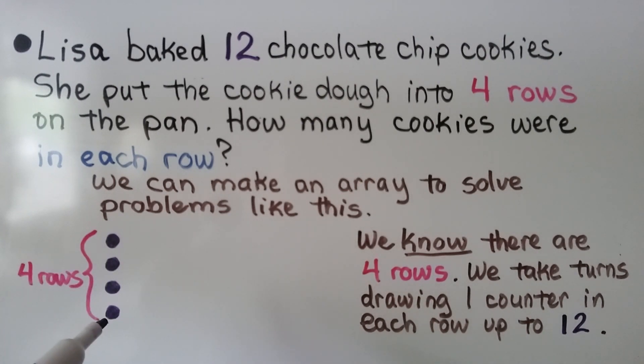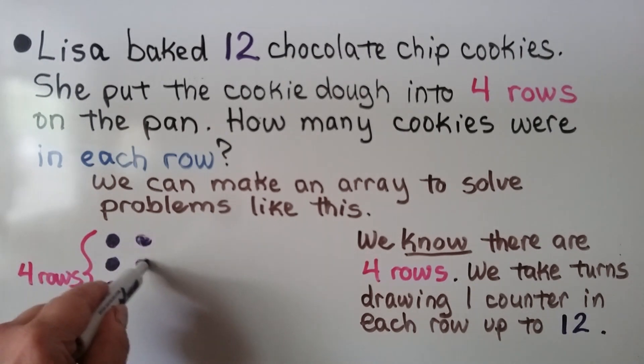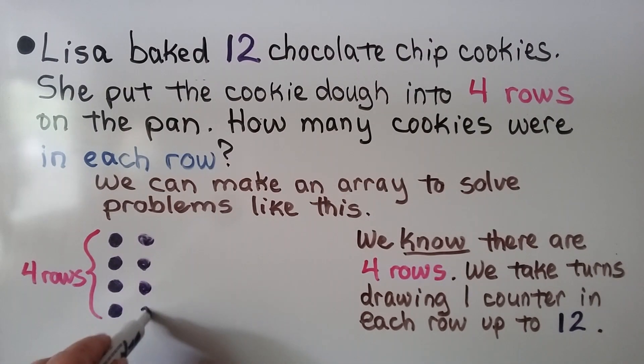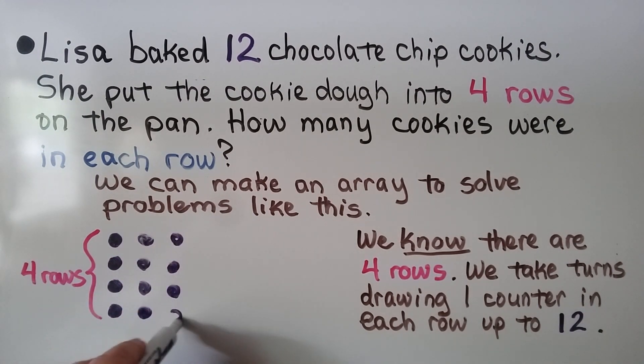We take turns drawing one counter in each row until we get up to 12. We have 4 rows: 1, 2, 3, 4. We need to go up to 12 for our counters. We take turns putting them in each row: 4, 5, 6, 7, 8, 9, 10, 11, 12.